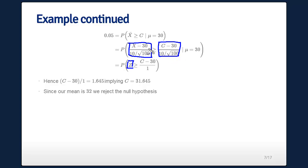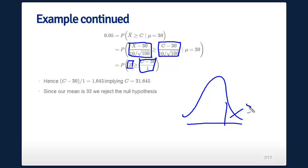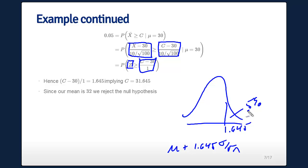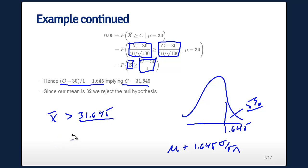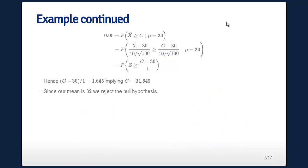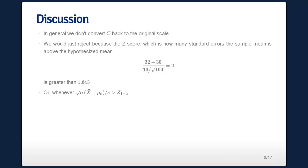Standardizing, we get c minus 30 over 1, and for the standard normal, the point so that 5% lies above it is 1.645. For the non-standard normal, that's mu plus 1.645 times sigma over square root n. Solving, c equals 31.645, so any time we get an x-bar greater than 31.645 we reject, where the 31 incorporates mu equal to 30 from the null hypothesis and sigma over square root n equals 1.